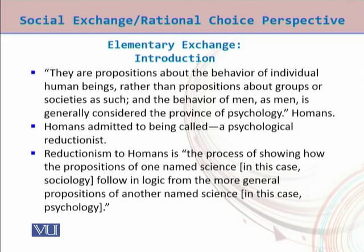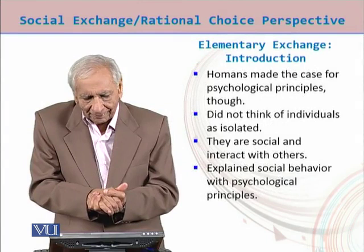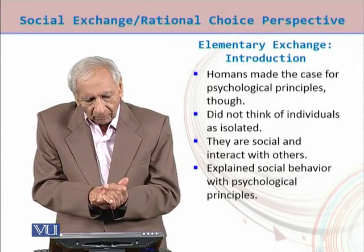Homans admitted to being called a psychological reductionist. It is the process of showing how the propositions of one named science — in this case sociology — follow in logic from the more general propositions of another named science, and that is psychology. So we see that Homans made the case for psychological principles.